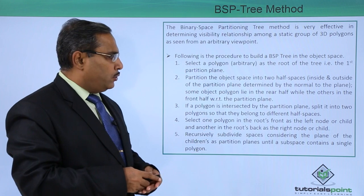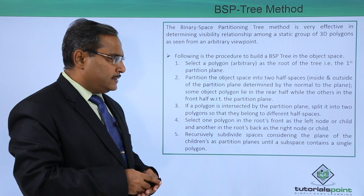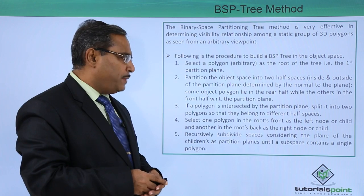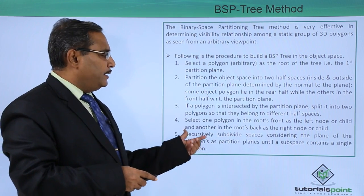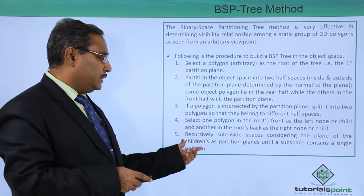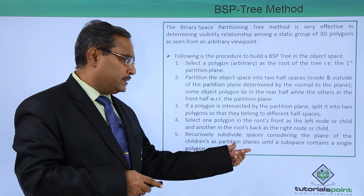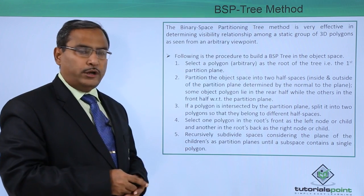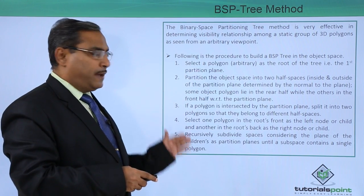Select one polygon in the root's front as the left node or child, and another in the root's back as the right node or child. Recursively subdivide spaces considering the children's planes as partition planes until a subspace contains a single polygon. This is the algorithm.